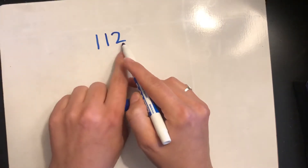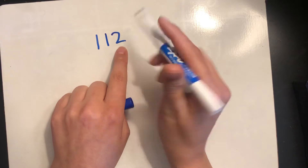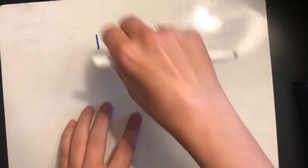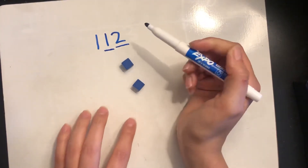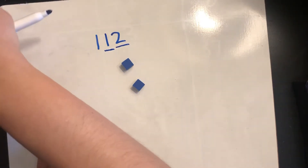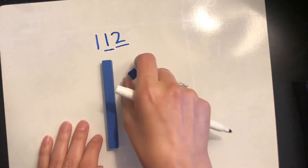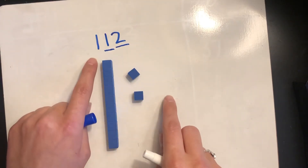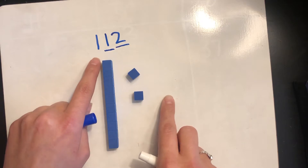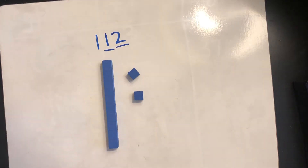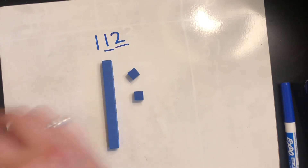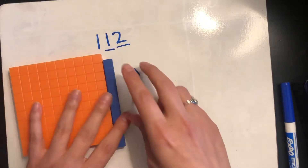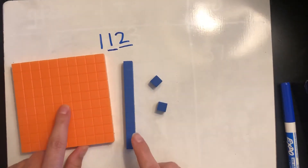So if you look over here, we know that the number on the right is going to be in the ones place, so we see it's going to have two ones. The next number is how many tens are in the number — in 112 there is one ten. And this next place is the hundreds place, so whatever number is there is how many hundreds are in the number. To show one hundred, we can use something called a hundreds flat — you might remember this from class. Okay, so I just built the number 112.